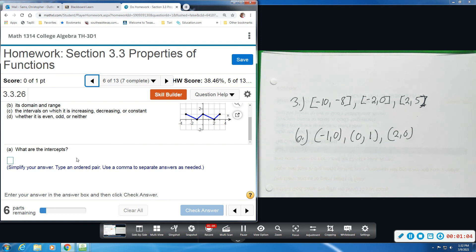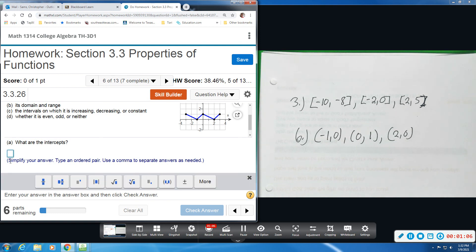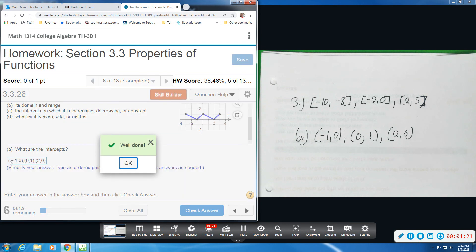It says to type them as ordered pairs, so we're going to type them just as we have listed them. Negative one, zero, and then zero, one, and then two, zero.